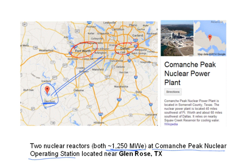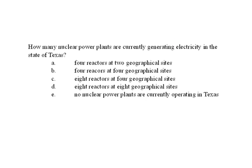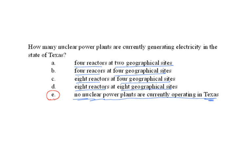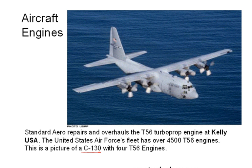This is the type of clicker question — and type of multiple choice — on the final exam. This has been on the final exam verbatim: 'How many nuclear power plants are currently generating electricity in the state of Texas?' A) Four reactors at two geographic sites, B) Four reactors at four sites, C) Eight reactors at four sites, D) Eight reactors at eight sites, E) No nuclear plants currently operating. The answer is C — four reactors at two sites. This is easy!